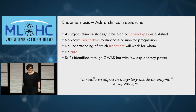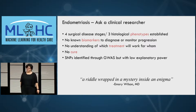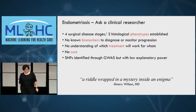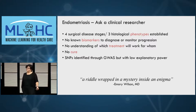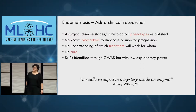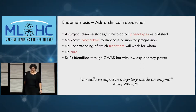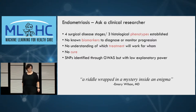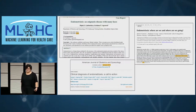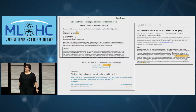If you were to ask a clinical researcher what endometriosis is, they would tell you that we're not really sure how many phenotypes there are. Maybe 4 if you think of it surgically by pathology and histological reports — maybe 3, we're not sure. There's no known biomarkers to diagnose or monitor progression, no understanding of which treatments will work for whom, and there's no cure. There have been some SNPs identified through GWAS, but they all have very low explanatory power. Dr. Wilson characterizes endometriosis as a riddle wrapped in a mystery inside an enigma, and very recent papers including one from January 2019 keep talking about how we know nothing about the disease.